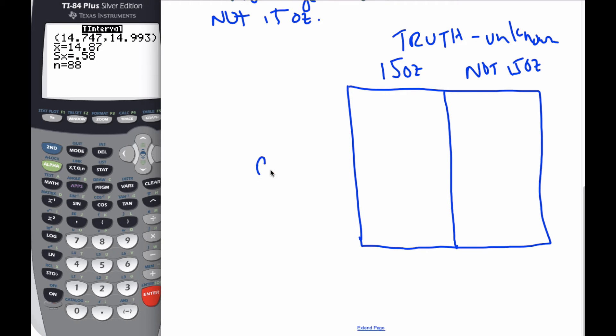Now, we have our claims. Our claim says it's making 15 ounce packages. If the claim says it's making 15 ounce packages and it is, that is a good thing. That makes us happy. That's the way it should be.